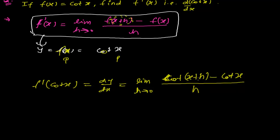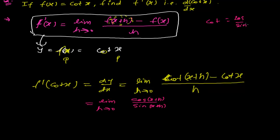Now, how do we solve this? As we did in the derivative of tan x video, we will change cot into cos over sin, as we do in trigonometry. So cot(x+h) becomes cos(x+h) divided by sin(x+h), because cot equals cos divided by sin. And cot x becomes cos x divided by sin x, all divided by h.